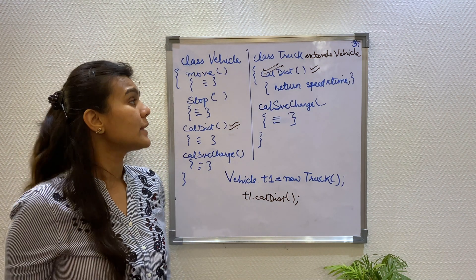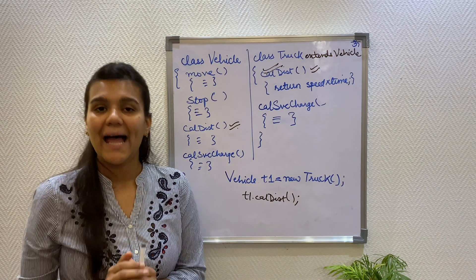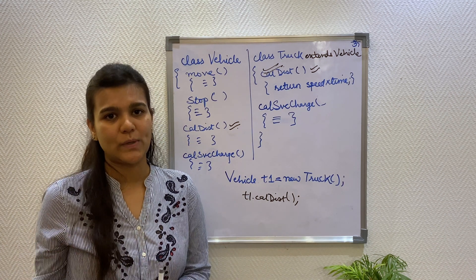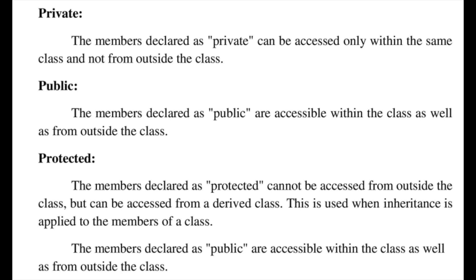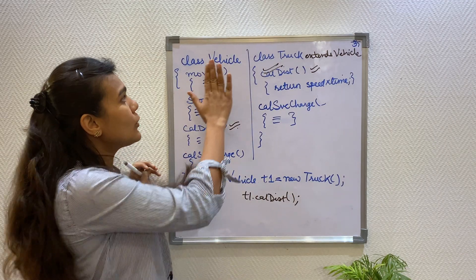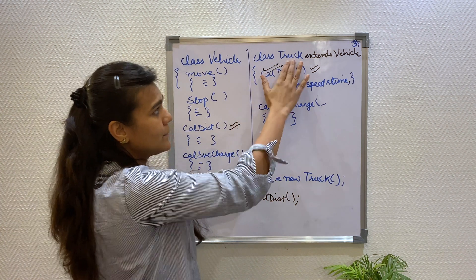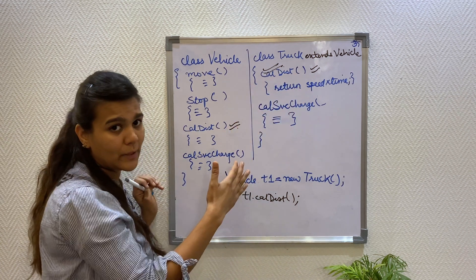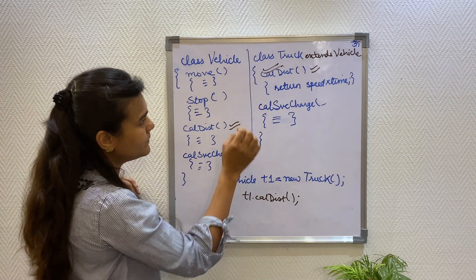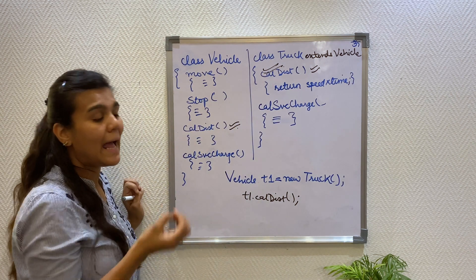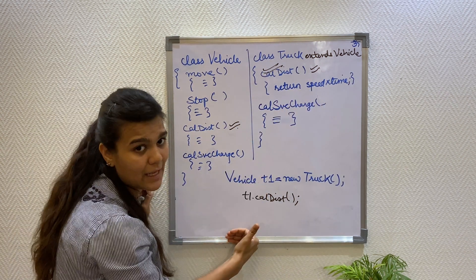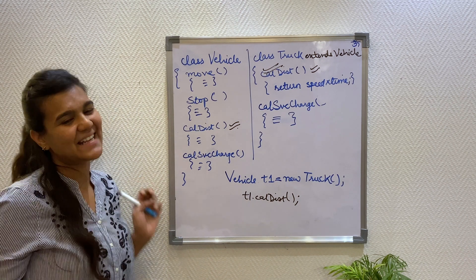The second condition is that the methods cannot be less accessible. I will be discussing access specifiers in my later videos. For now, public methods are methods that can be accessed from anywhere. Private methods are methods that can be accessed only within the same class. If in your vehicle class you have the calculate distance method as public but override it as private in the truck class, the method will not be accessible to the t1 object outside the class and an exception will occur.